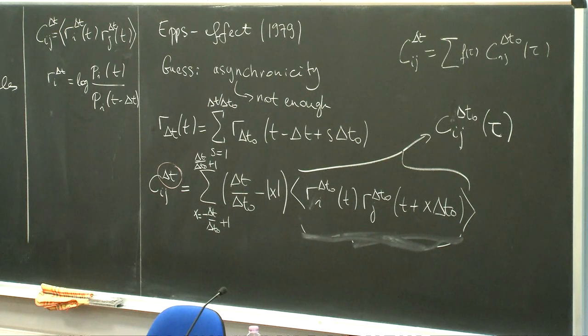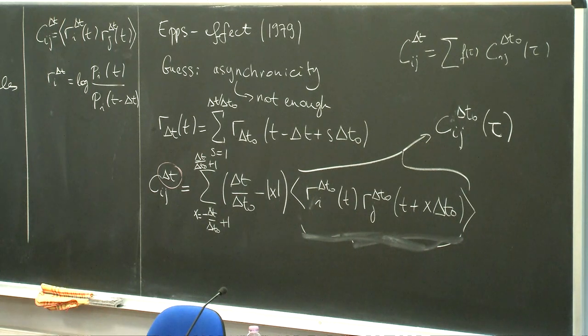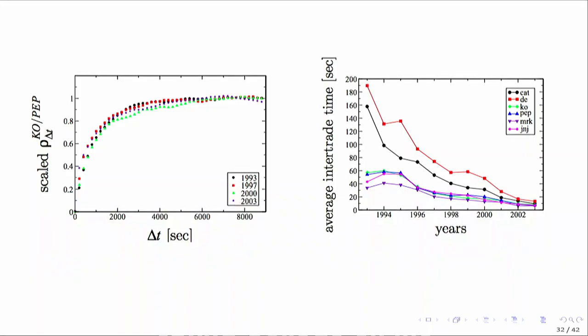But why is asynchronicity not the full explanation? The average inter-trade time went down by a factor of 10 in the period studied, so the probability of nothing happening in a window should have gone down by roughly a factor of 10. This would suggest that the characteristic time for the correlation to reach its asymptotic value should have changed - but what we see is that it actually did not change; it remains relatively stable.